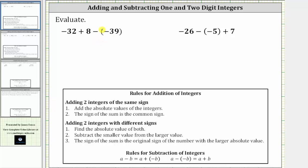Looking at the first expression, we begin by determining negative 32 plus eight. Notice the negative 32 is going to outweigh the positive eight, and therefore this sum is going to be negative. If we think of this in terms of money, the negative 32 represents a loss of $32, and the plus eight represents a gain of $8. If we lose $32 and gain $8, we are still down $24, and therefore the sum is negative 24.